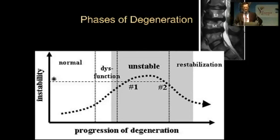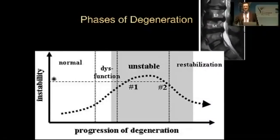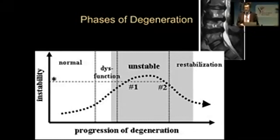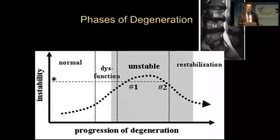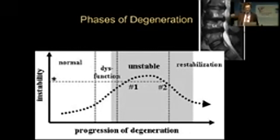I want to remind you of the phases of degeneration. There is a first dysfunctional phase where simple back pain starts — sometimes you can even see some black discs on MRI images. Then an unstable phase where there may be degenerative listhesis or some deformities. And then a restabilization phase. Our surgeries must be tailored according to those phases, and the difficulty is that sometimes in one patient, one level is in the unstable phase while another level is in the restabilization phase.